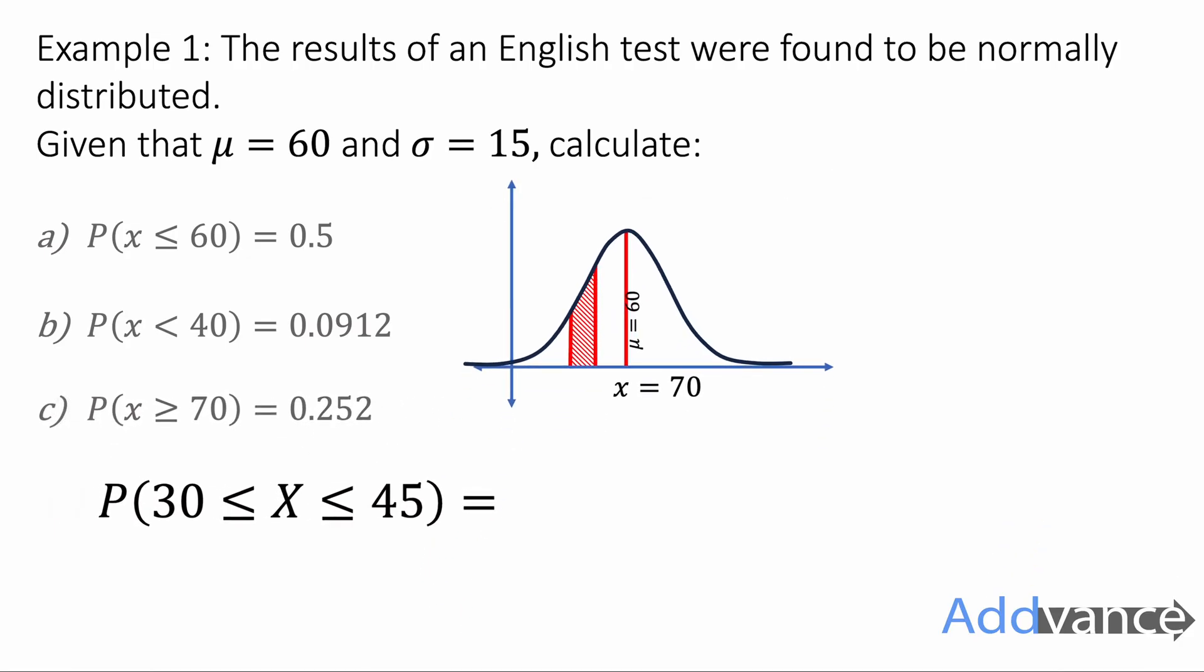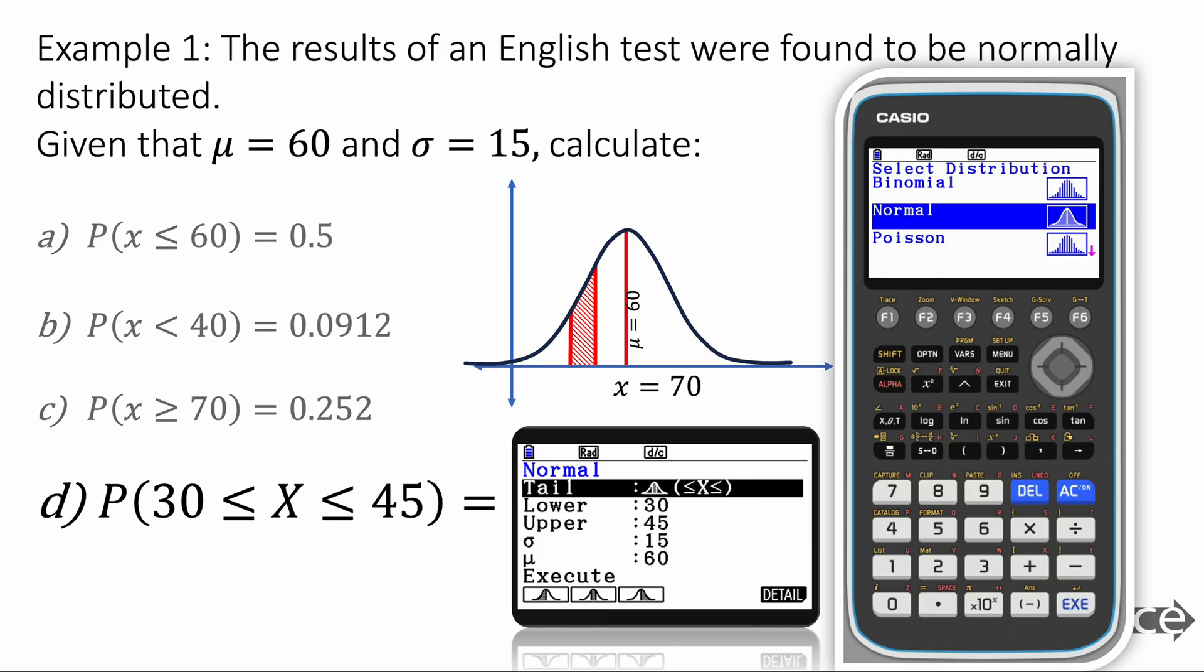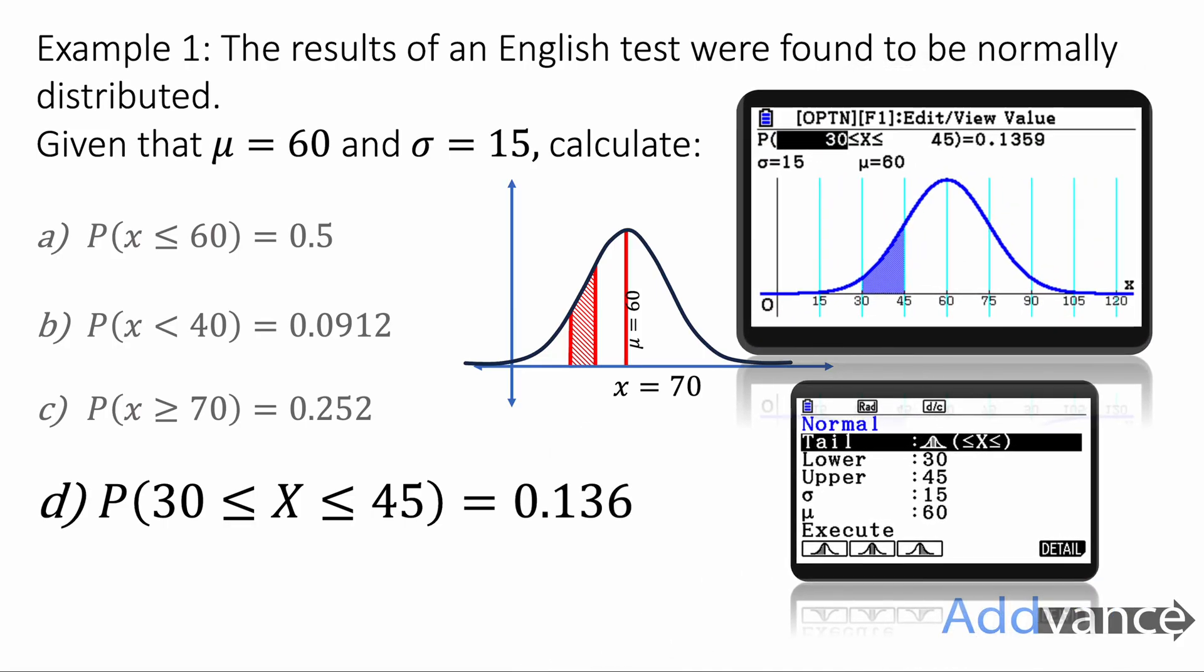Finally, let's work out the probability that 30 is less than or equal to x is less than 45. And here, this is a central tail because it's in the middle of two values. We call it central. So we choose central for the tail. Lower is 30. Upper is 45. Standard deviation is the same, still 15. Mean is still 60. Your calculator remembers this information and it draws it like this. And here we get the probability of 0.1359 or 0.136 if you round that. Perfect. That is how you calculate normal distribution using your calculator.